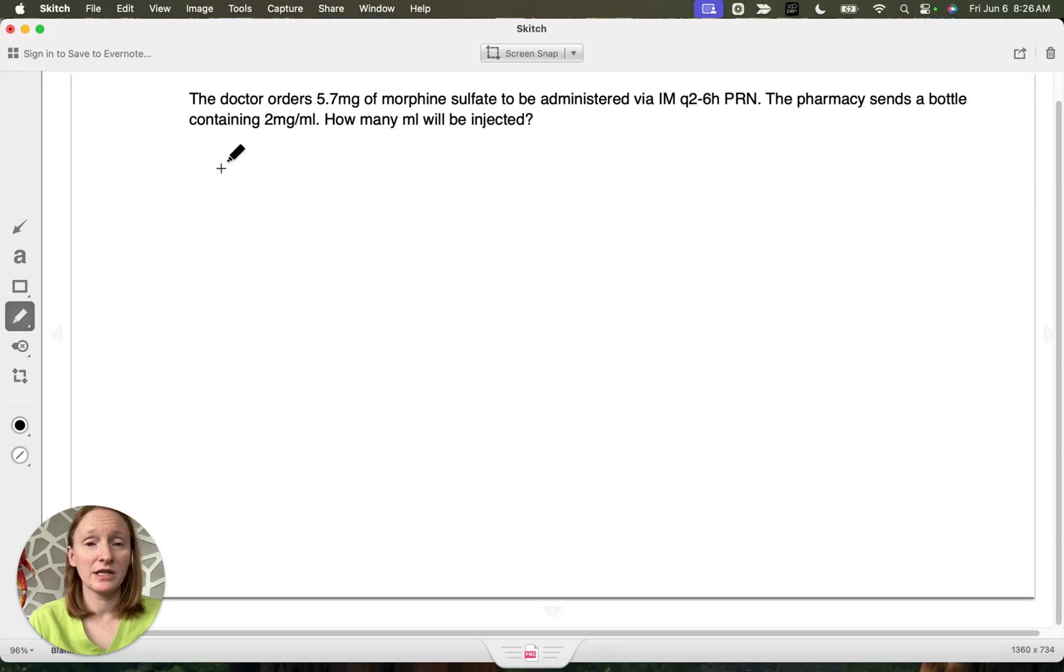Now let's move on to our IM injection dosage calculation. The doctor, it should say healthcare provider, orders 5.7 milligrams of morphine sulfate to be administered via IM Q2 to 6 hours PRN. PRN just means as needed. The pharmacy sends a bottle containing two milligrams per milliliter. How many milliliters will be injected? We're going to start with our step one because we do this the same exact way every single time. And what are we solving for? We're solving for milliliters per injection. We could say injection, but I like to stick with dose. It's good to use the same word every time. It helps for simplicity. And we can check ourselves when we know how many milliliters to give and we give it. Will that be giving one dose? Yes. And when we give one dose, will that be how many milliliters we give? Yes. So that is an appropriate buddy to solve for.